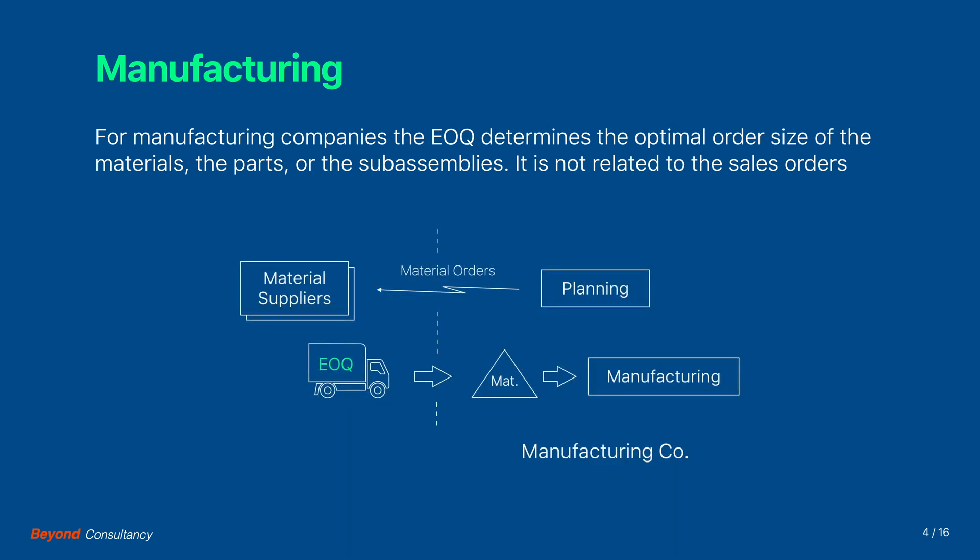This can be represented in the following value stream map. The planning department of a manufacturing company orders the materials with the suppliers. These materials are then received and stored in the materials warehouse. Smaller order lot sizes will lead to more orders and thus more work in ordering and receiving, while larger lot sizes will lead to larger storage space requirements. The question is to find the right balance.